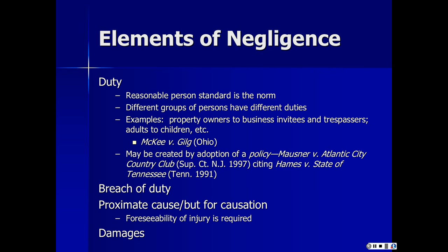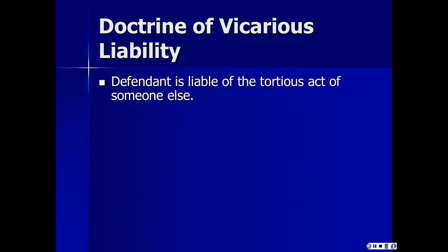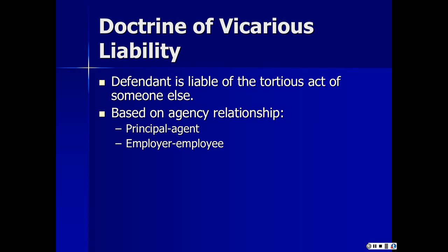The last of the elements is damages, which we've talked about. One of the principal legal rules in tort law — and it applies to corporate governance and business association laws as well — is the doctrine of vicarious liability. The notion of that term 'vicarious' means through someone else. In vicarious liability, the defendant is liable for the tortious act of someone else. It's based on an agency relationship. In common law there is a principal and an agent, and an agent acts for the principal.